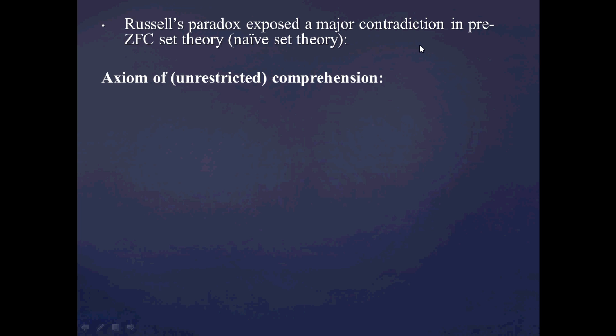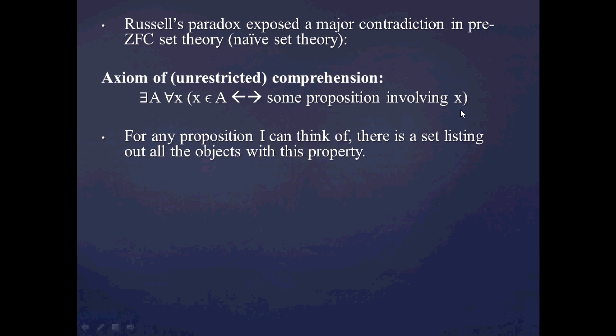So the problem comes when you accept the truth of this axiom, which is called the Axiom of Unrestricted Comprehension. So what this axiom says is that there exists a set A such that all the members of the set A satisfy some proposition involving x. And essentially what this does is it says that for any proposition that I could plop into this phrase here, any proposition I could think of, there's some set which can list out all the objects with this property.